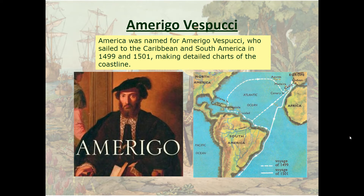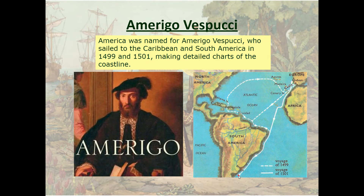America was named for Amerigo Vespucci, a man little known today, who sailed to the Caribbean and South America in 1499 and 1501 and made detailed charts of the coastline. He followed part of Columbus's exploration to the Caribbean, then sailed down the coast of what is today Brazil and made accurate maps during his 1499 voyage. In 1501 he came back across the Atlantic at its narrowest point and finished a voyage down the coast of Brazil to the northern part of what is today Argentina, making an accurate chart of the entire coastline.